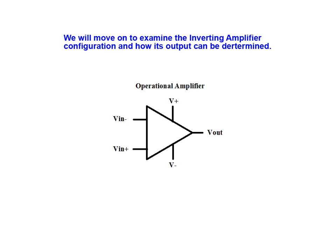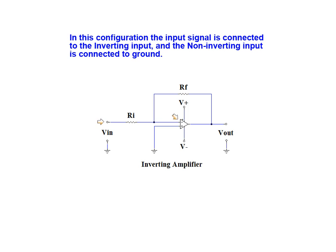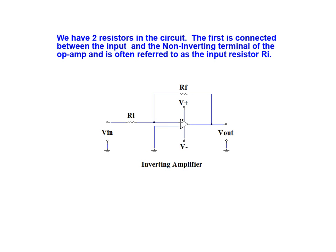We will now move on to examine the inverting amplifier configuration and how its output voltage can be determined. Here we have the traditional inverting amplifier circuit made with an op-amp. In this configuration the input signal is connected to the inverting input and the non-inverting input is connected to ground. In addition to the op-amp itself we have two resistors in this circuit. The first resistor is connected between the input and the inverting terminal of the op-amp and is often referred to as the input resistor RI.